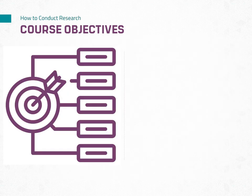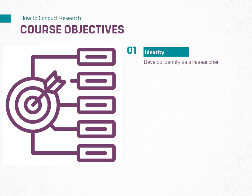In this course, you will learn the key steps of the research process and how to apply them to conduct research. The objectives of this course are to help the learner to: 1. Develop an identity as a researcher. Anyone can be a researcher if they have a desire to explore, the curiosity to drive them, and the discipline to do the work, and apply the scientific method.